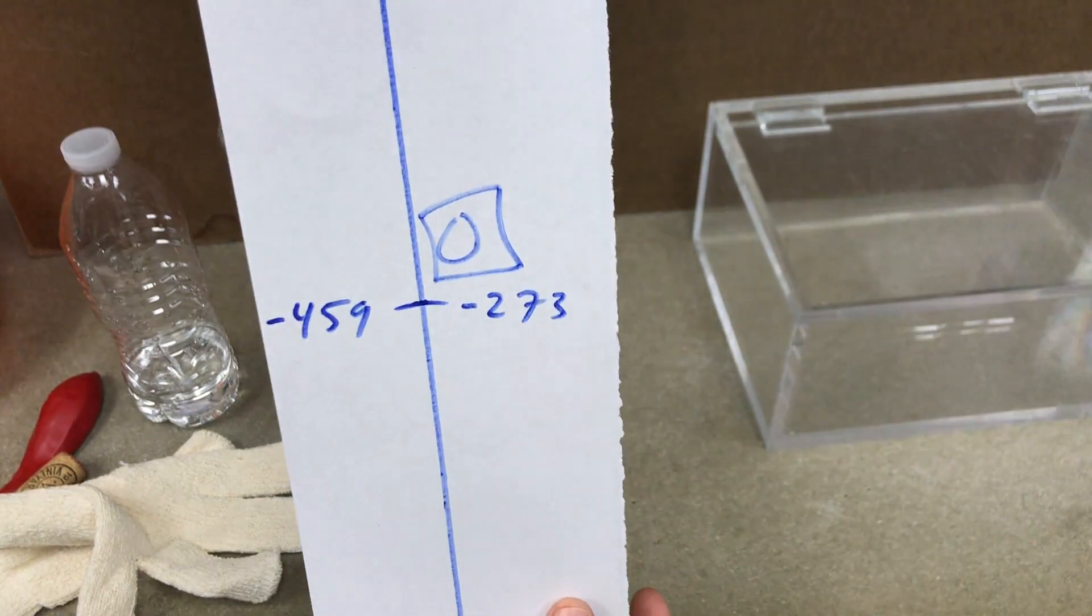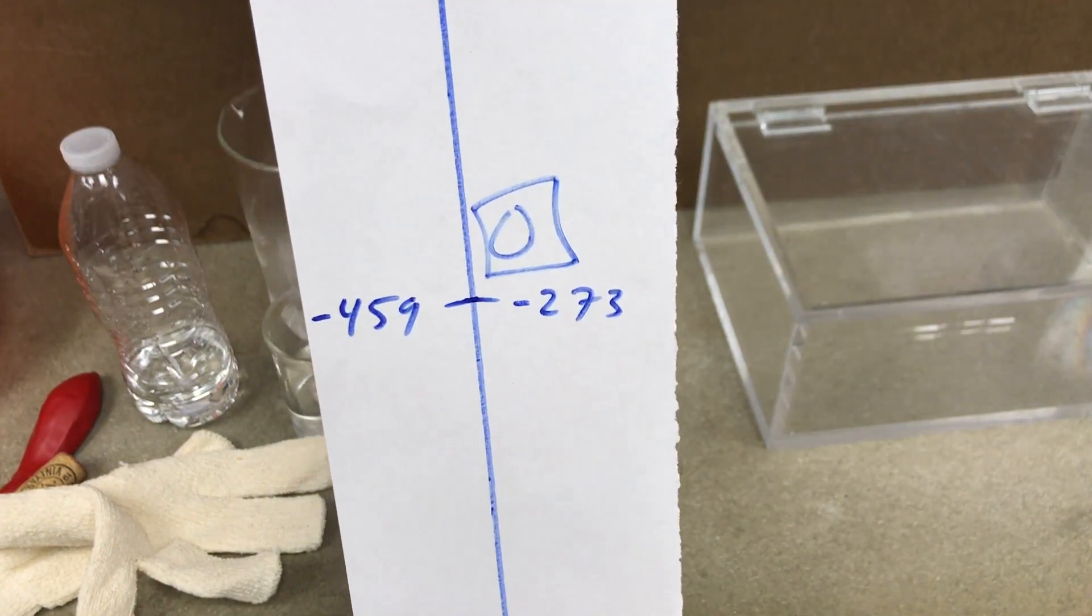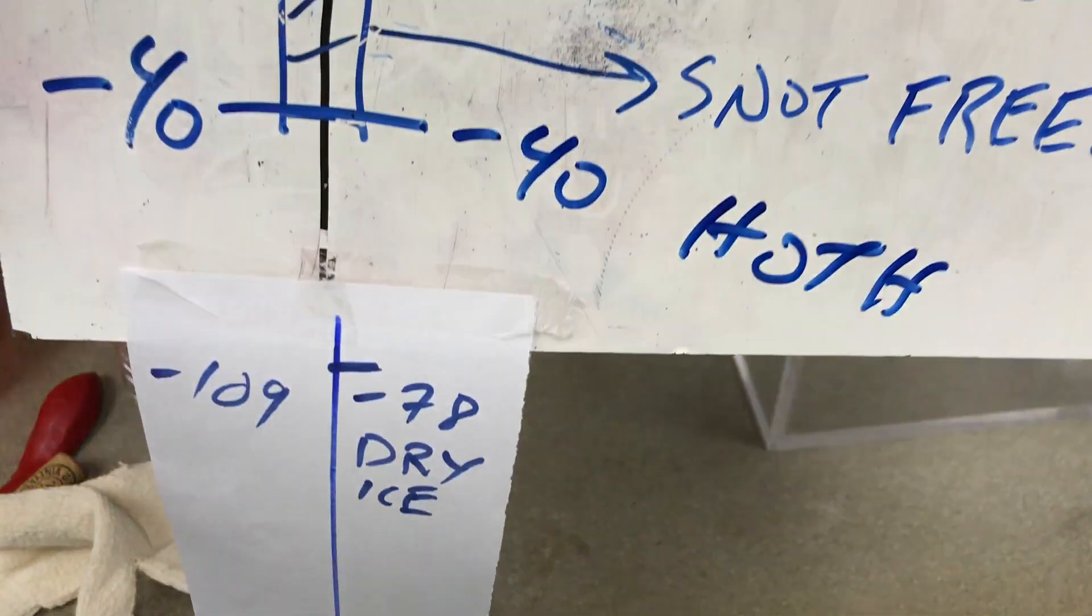And then down here, negative 459 Fahrenheit, negative 273 Celsius. That's the coldest you can get. There's nothing below that. You can't go any colder. So there's your temperature scale.